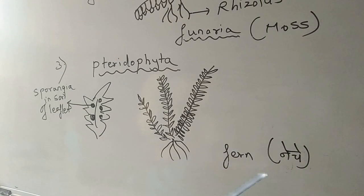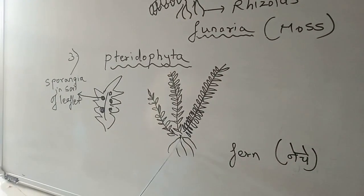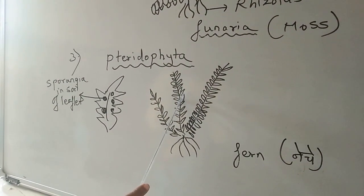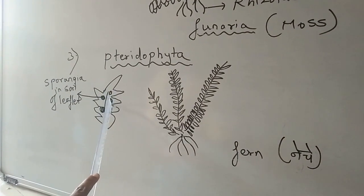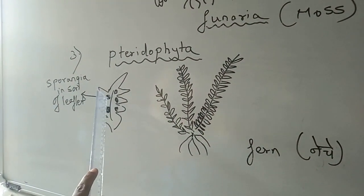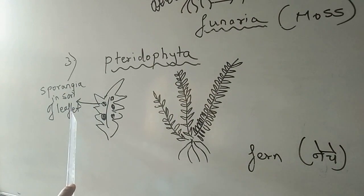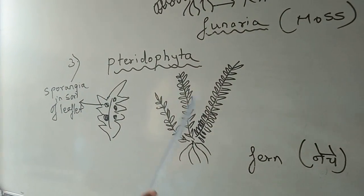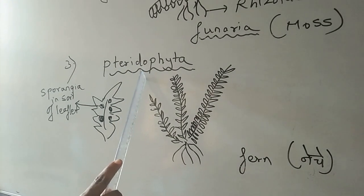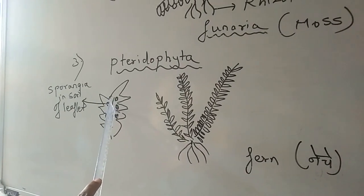Here we will take an example of fern. If you observe the fern, there are roots and leaves present. Now, if you pluck one of the leaves and look at the back of the leaf, you can see a round-shaped structure called sporangia. When the sporangia breaks open, the spores will fall down and each spore will give rise to a new type of fern plant. So here also we can see sexual reproduction. The special characteristic of Pteridophyta is the presence of sporangia on the leaves.